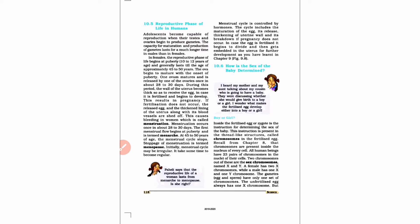This is section 10.5: the reproductive phase of life in humans. Adolescents become capable of reproduction when their testes and ovaries begin to produce gametes. We can say that an adolescent is capable of reproduction when the testes and ovaries can produce gametes.